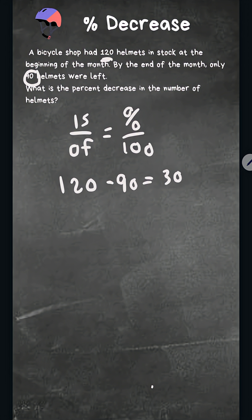Now we need to figure out what's the is and the of. It's basically asking this decrease of 30 helmets is what percent of our original 120. So the 30 becomes the is. So 30 is what percent of 120?